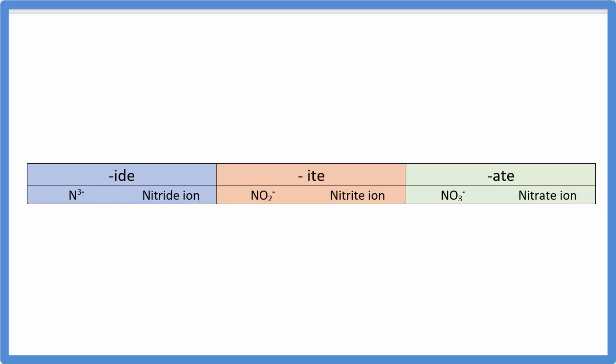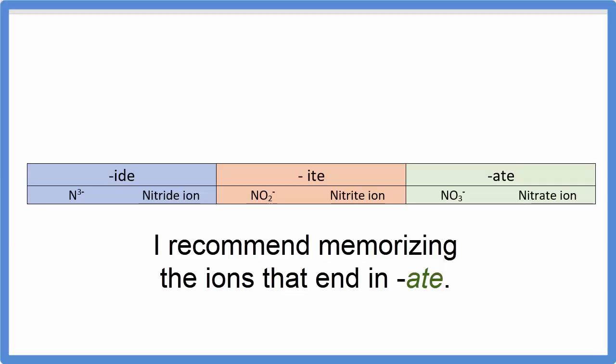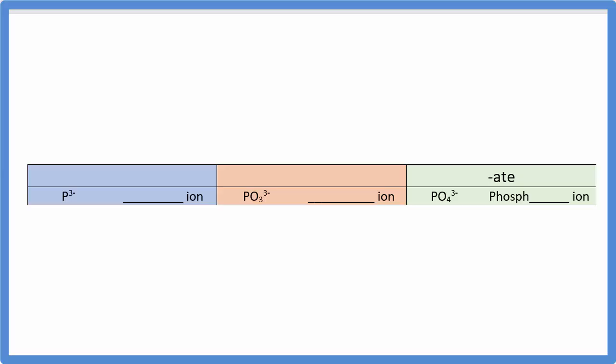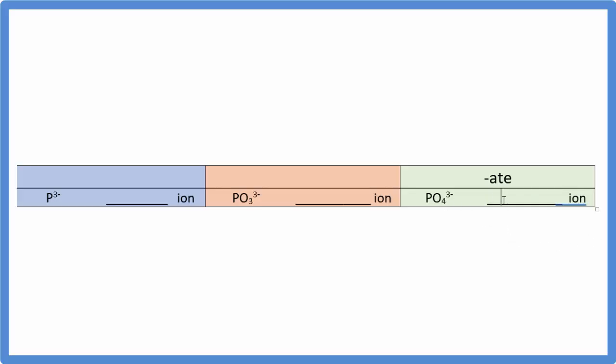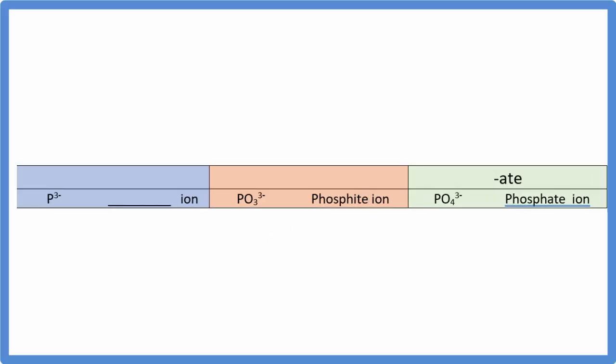Of course, for this to work, you do have to have either the nitrite or the nitrate ion memorized. I recommend memorizing the polyatomic ions that end in ATE. If you know these, you can use this rule to figure out the ones that end in ITE. Pause and give another one a try. So we know that PO4 3-, that's the phosphate. So PO3 3-, with one less oxygen, that's the phosphite. And then just P, that's the phosphorous ion, we call it the phosphide ion.